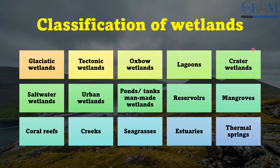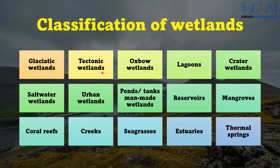The classification of wetlands is based on origin, vegetation, nutrient status, and thermal characteristics of water bodies. Glacial wetlands develop because of accumulation of water melted from glaciers — examples include Morori Lake in Jammu & Kashmir and Chandratal Lake in Himachal Pradesh. Tectonic wetlands are created because of tectonic movements — examples are Nil Nag in Jammu & Kashmir, Khajar in Himachal Pradesh, and Nainital and Bhimtal in Uttaranchal.